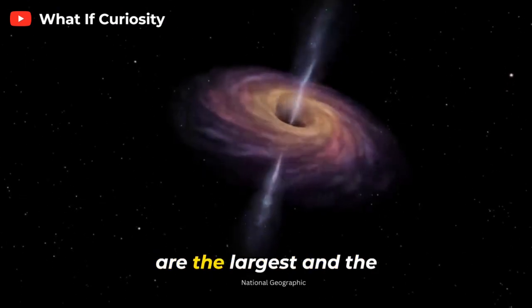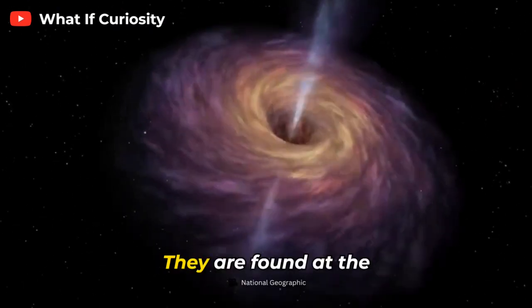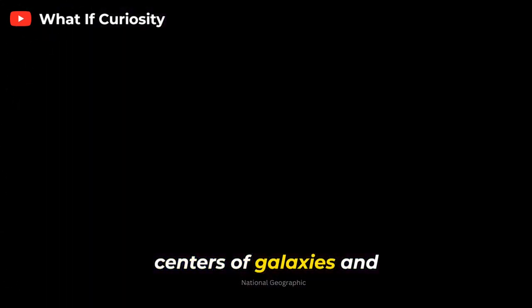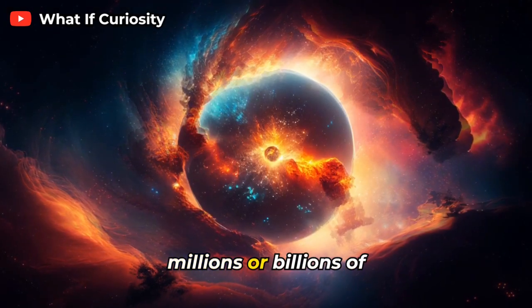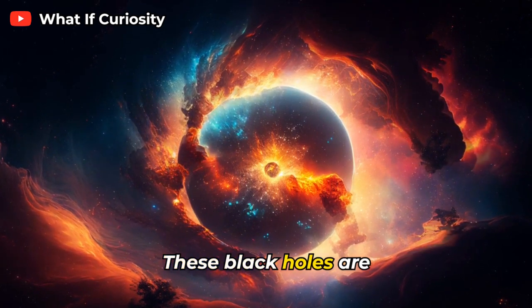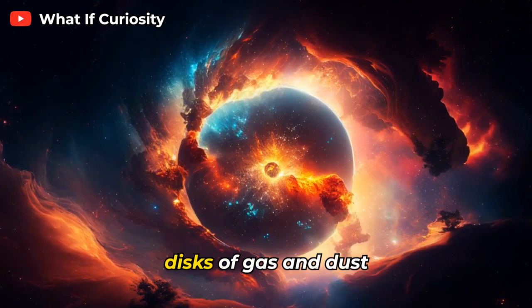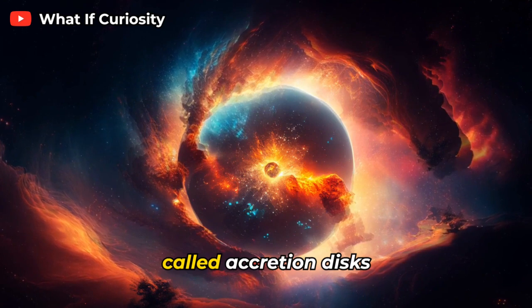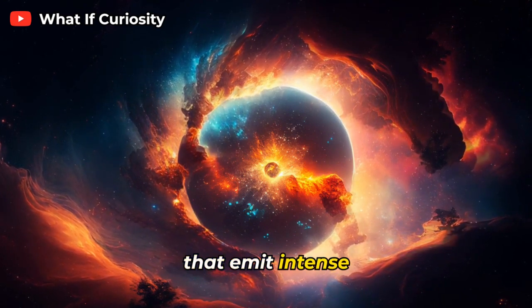Supermassive black holes are the largest and the most powerful. They are found at the centers of galaxies, and can have masses of millions or billions of suns, and radii of millions of kilometers. These black holes are surrounded by swirling disks of gas and dust, called accretion disks, that emit intense radiation.